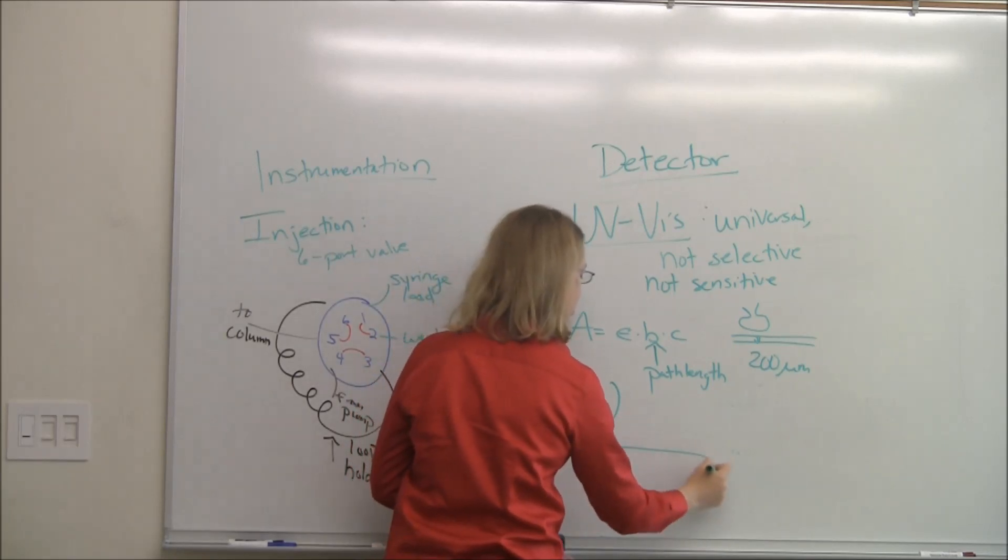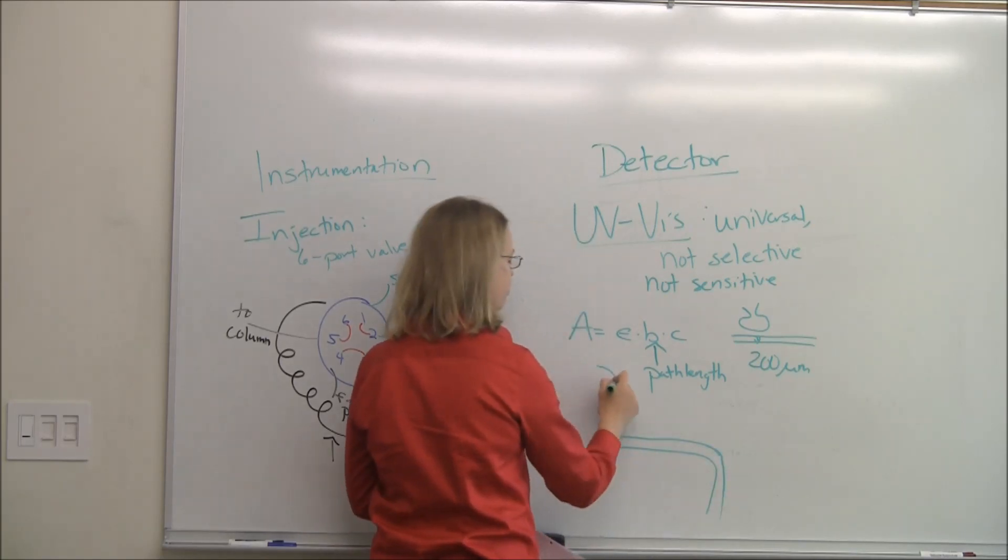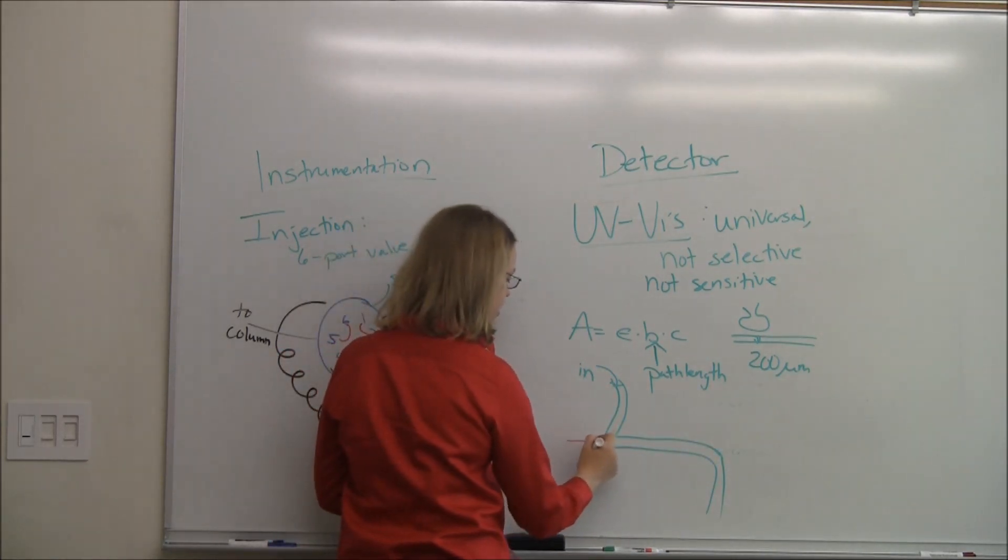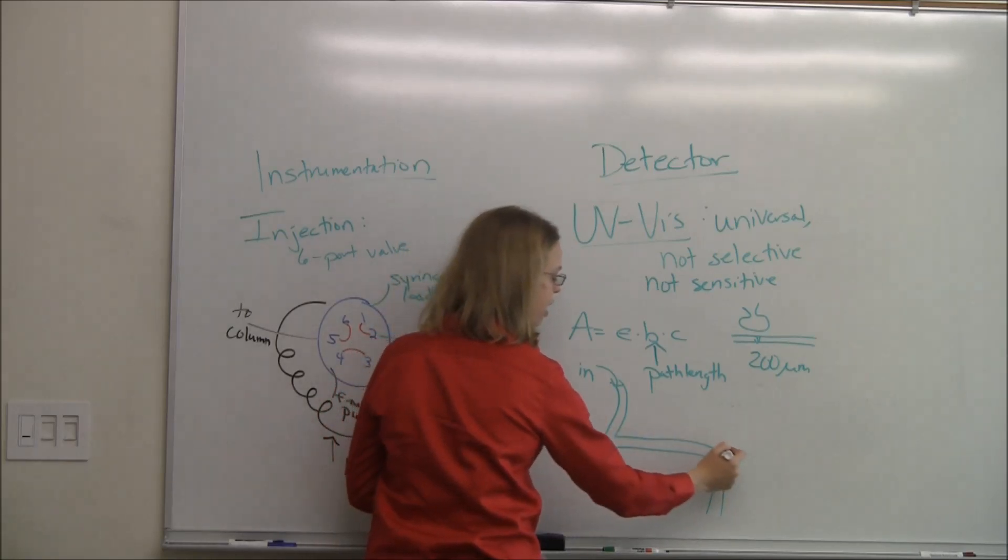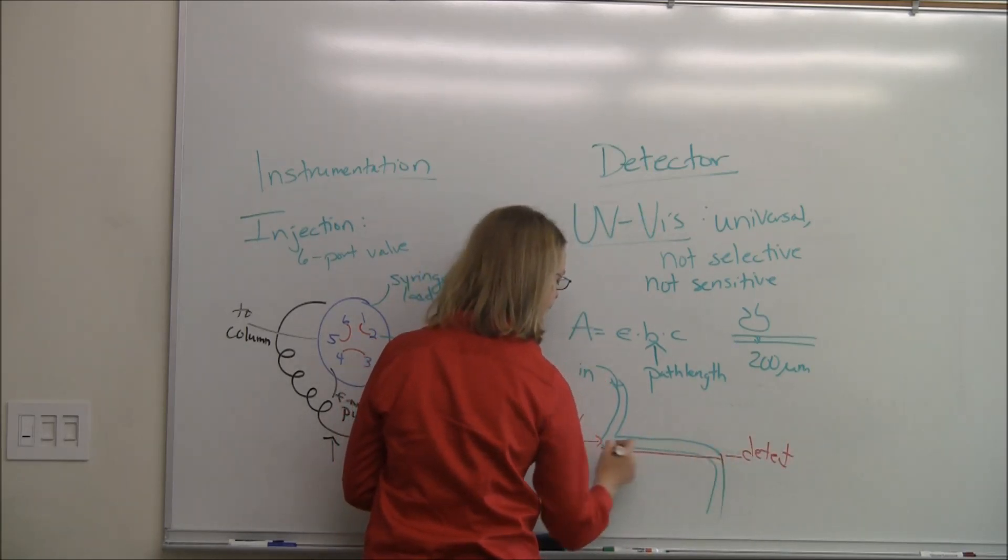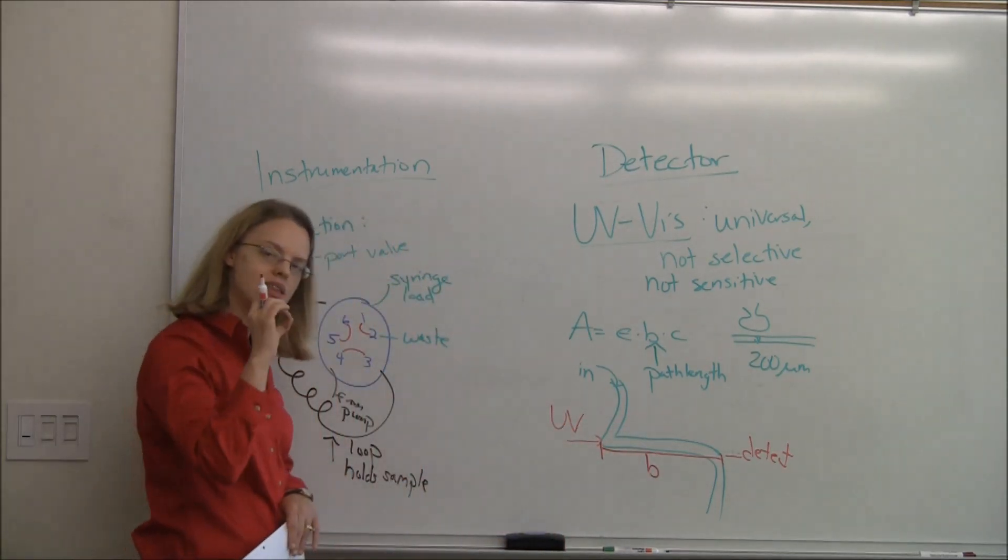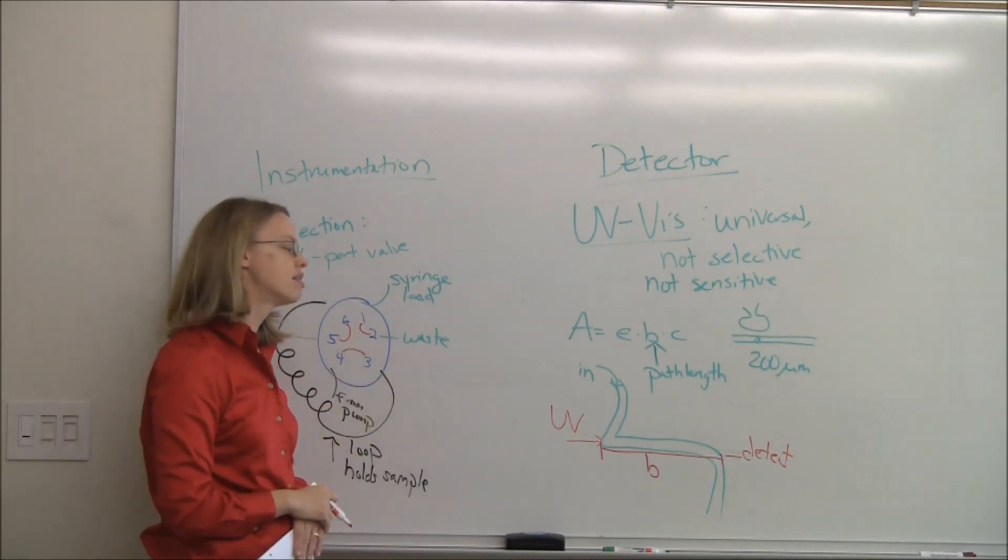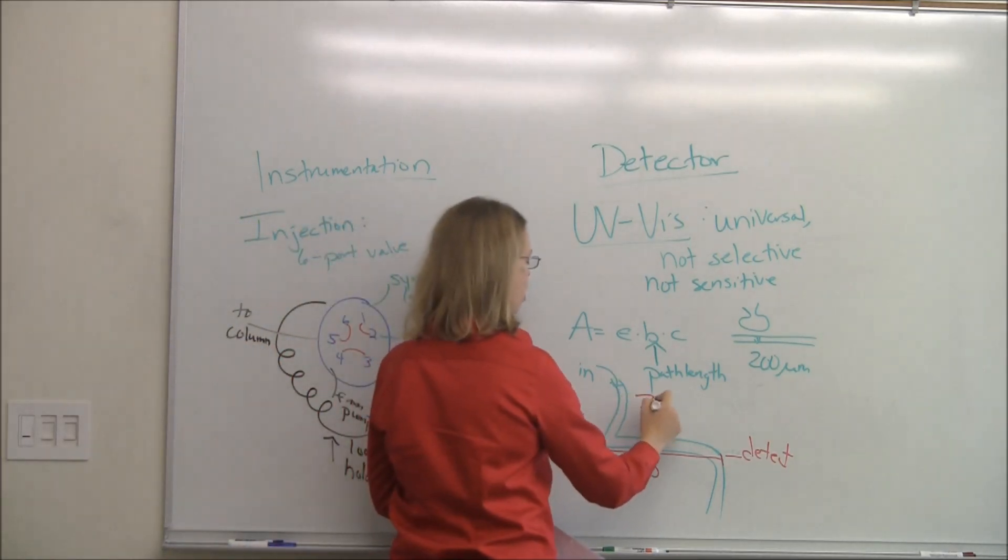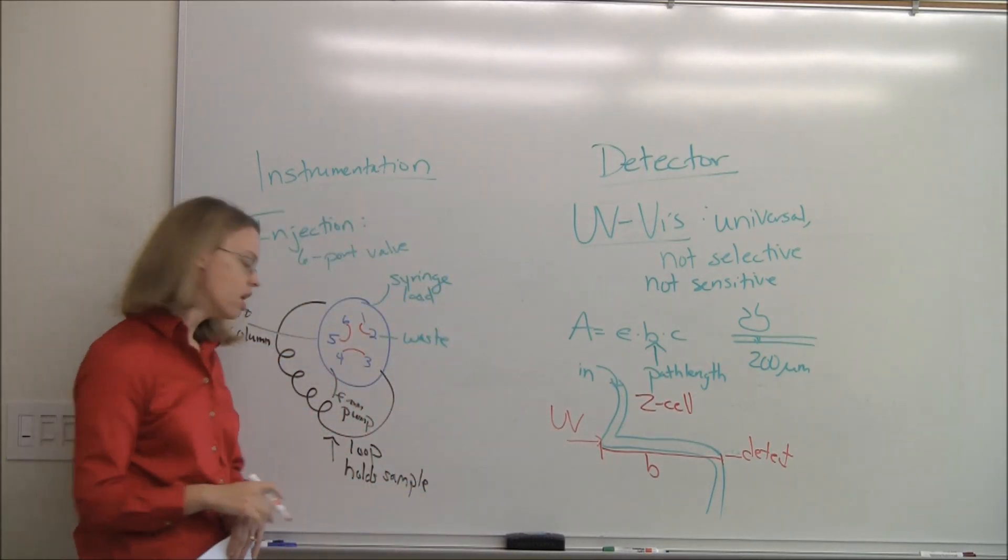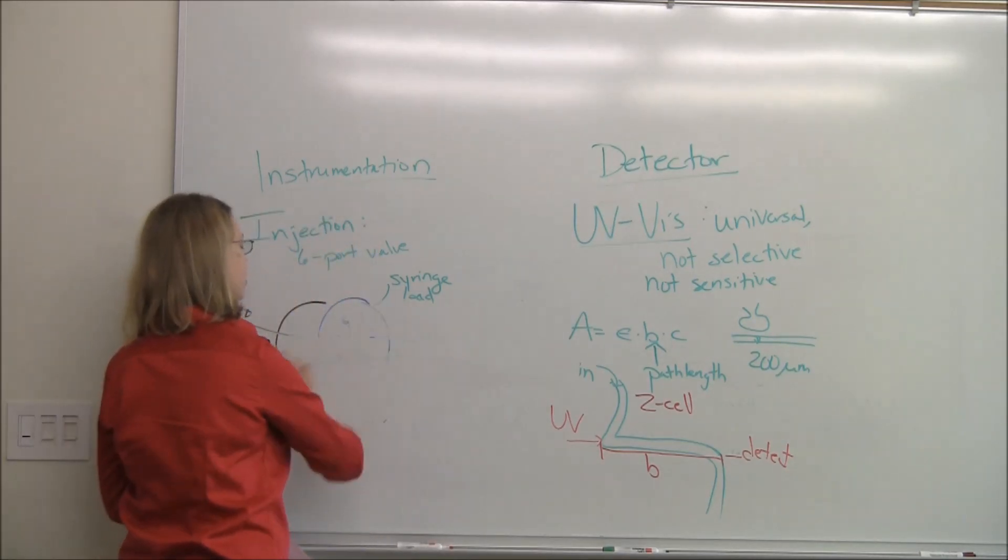They've solved this problem by making a different type of cell in our detector, and the cell is called a Z-cell. What they do is look at it like this. Your sample will flow in, and then it'll flow crossways, and it'll go out. And your UV light comes in this way, and you detect over here. So now by this design, my path length is a lot longer. It's not the length of the column, it's not the width of the column, but we can make an optically transparent sort of length. And so this Z-cell is what's used in all chromatography. If you did it over the path there, you'd get almost no absorbance, and you'd have no sensitivity.